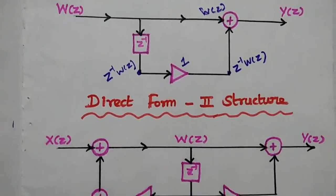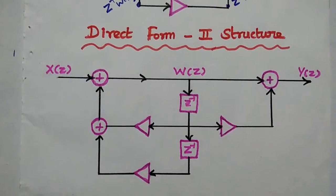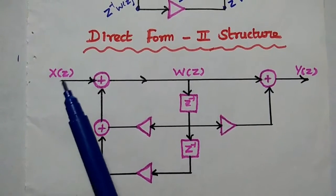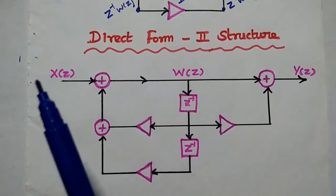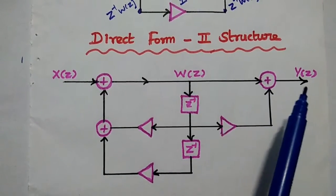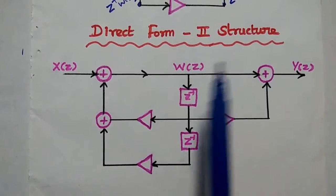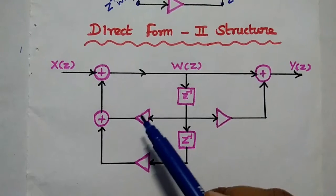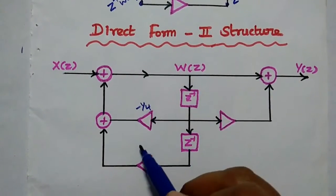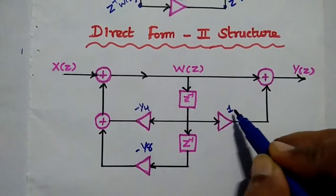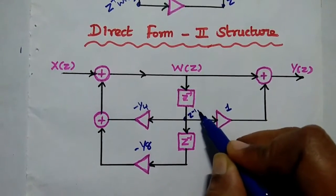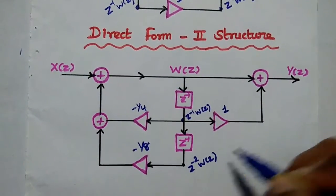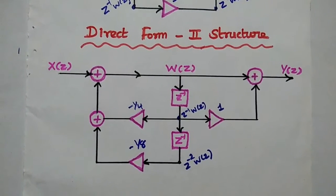Finally, we combine these two structures to get the Direct Form 2 structure. X(Z) is the general input, Y(Z) is the general output, and W(Z) is the intermediate value. The first equation contributes coefficients −1/4 and −1/8 on the left side. At one point we have Z⁻¹·W(Z), and at the next Z⁻²·W(Z). The coefficient on the right side is 1. This is the final structure of the system.